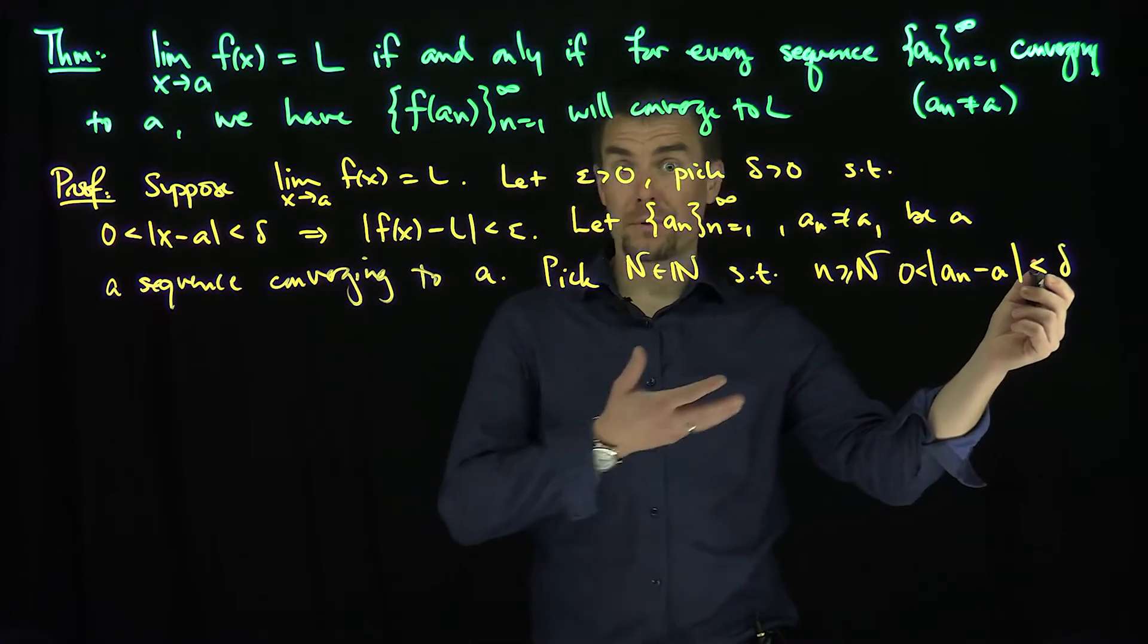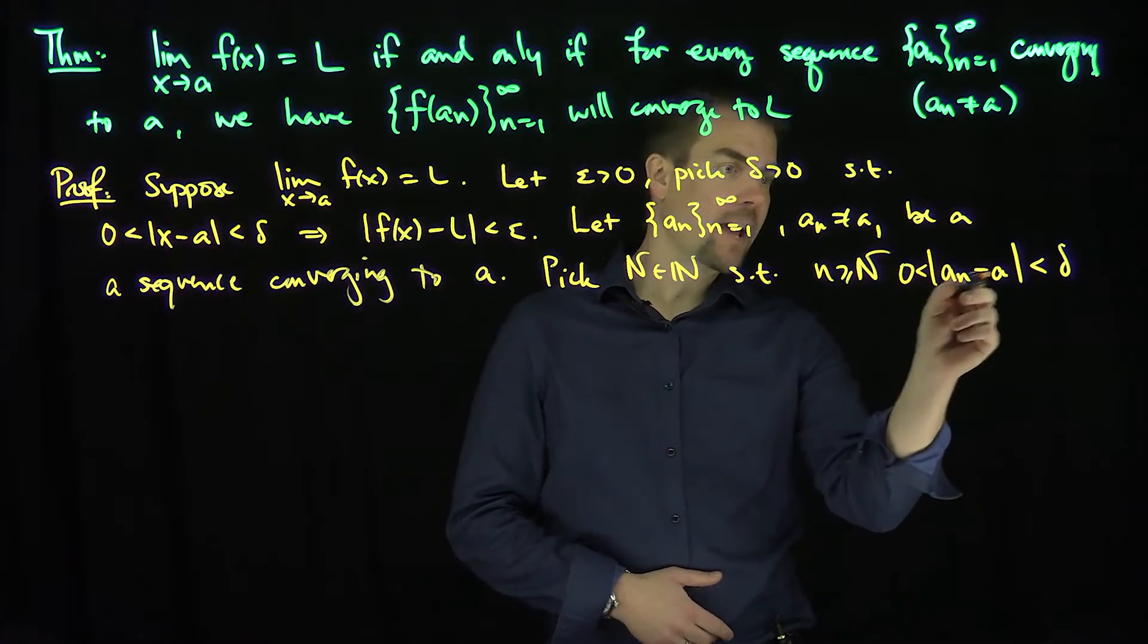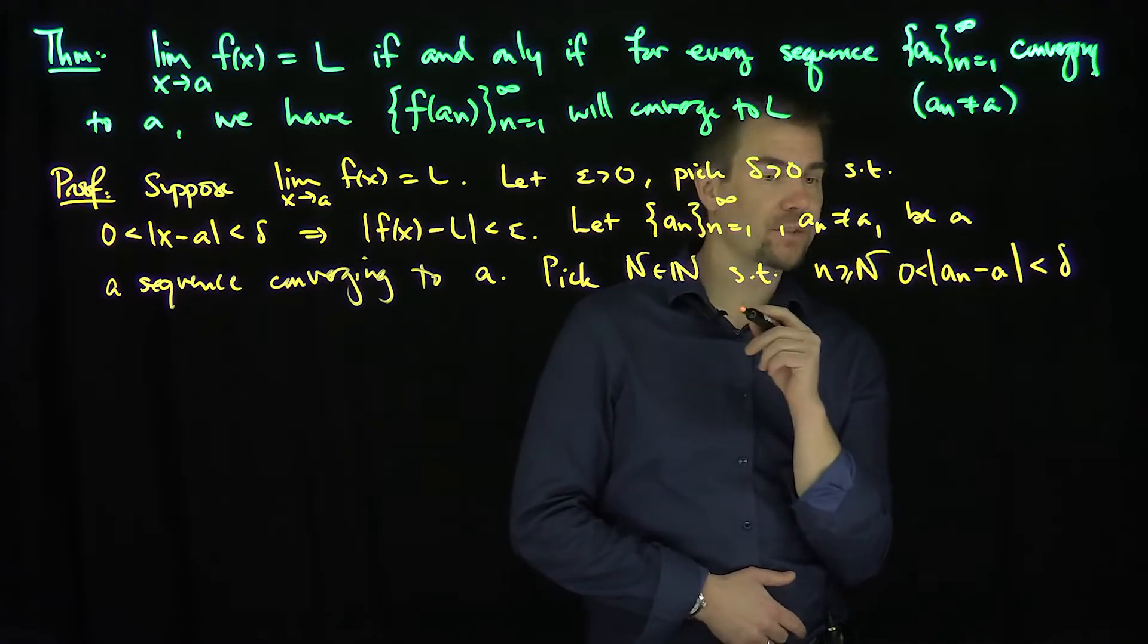Because that's the definition of the sequence converging to a. That means for any positive number I want, in particular delta, I can find an N such that |aₙ - a| is less than that fixed parameter.